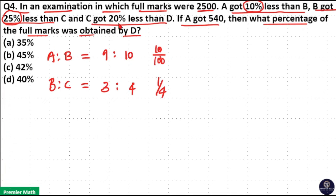Again, C got 20% less than D. So C is to D ratio - here 20% means 20 by 100. 20 goes 5 times in 100, that is 1 by 5 is the ratio. So if D got 5 marks, then C got 5 minus 1, 4 marks. 1 less than D, that is 4 marks.